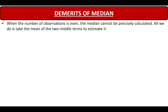Now let us come to the demerits of median. The first demerit is that when the number of observations is even, the median cannot be precisely calculated. All we do is take the mean of the two middle terms to estimate it. When the number of observations are even, we take the mean of those two observations as a norm, and we do not consider the remaining items that might lie between those two items. So this is one of the demerits of median — it cannot be precisely calculated because we are taking the mean of the two middle terms.